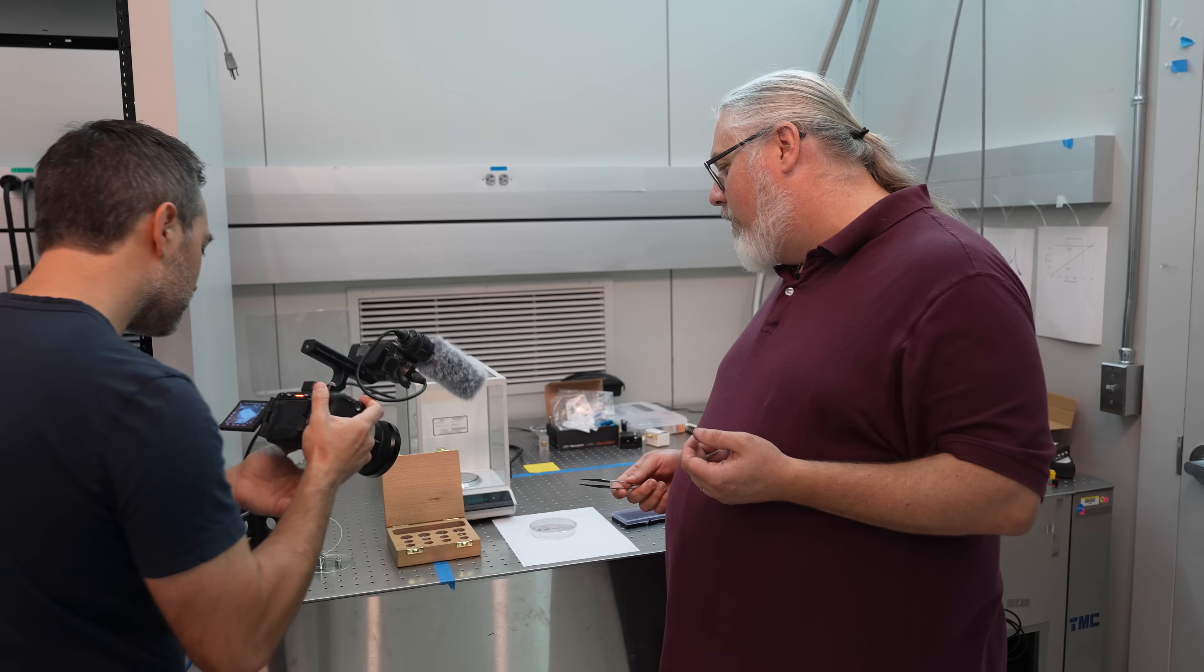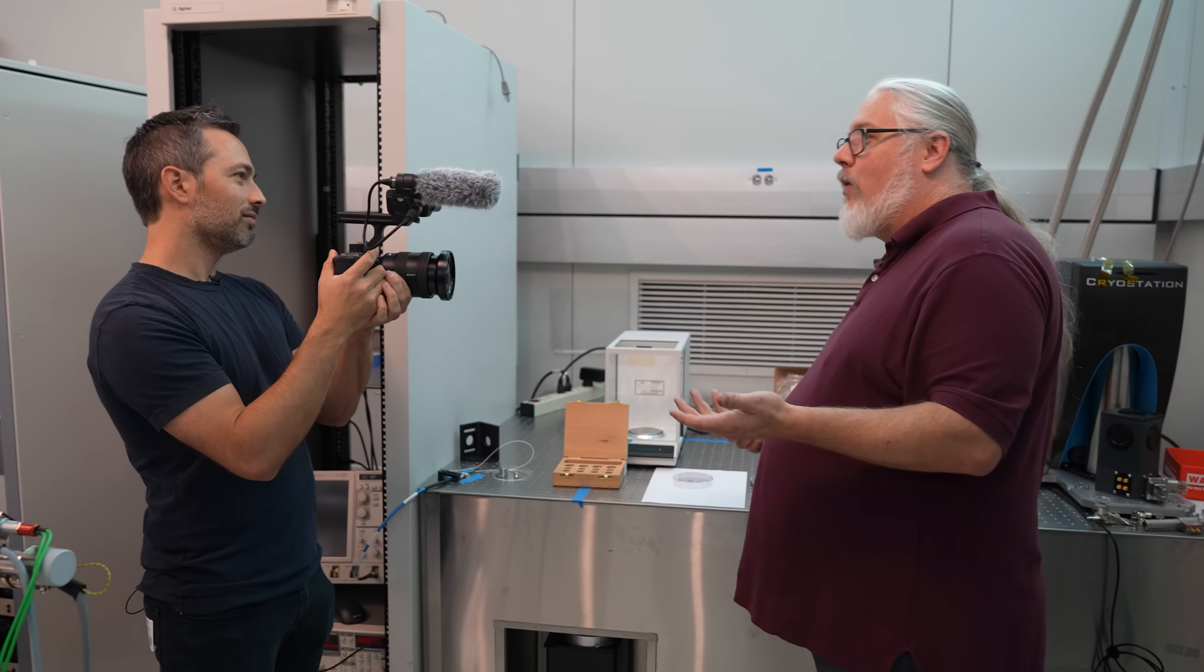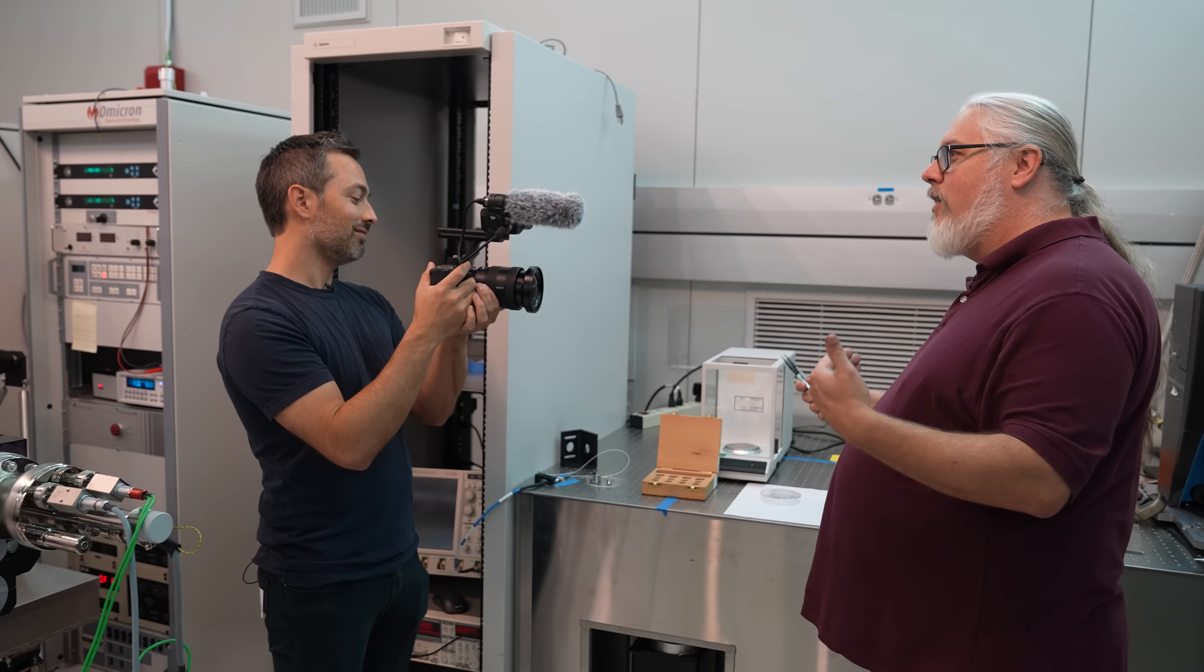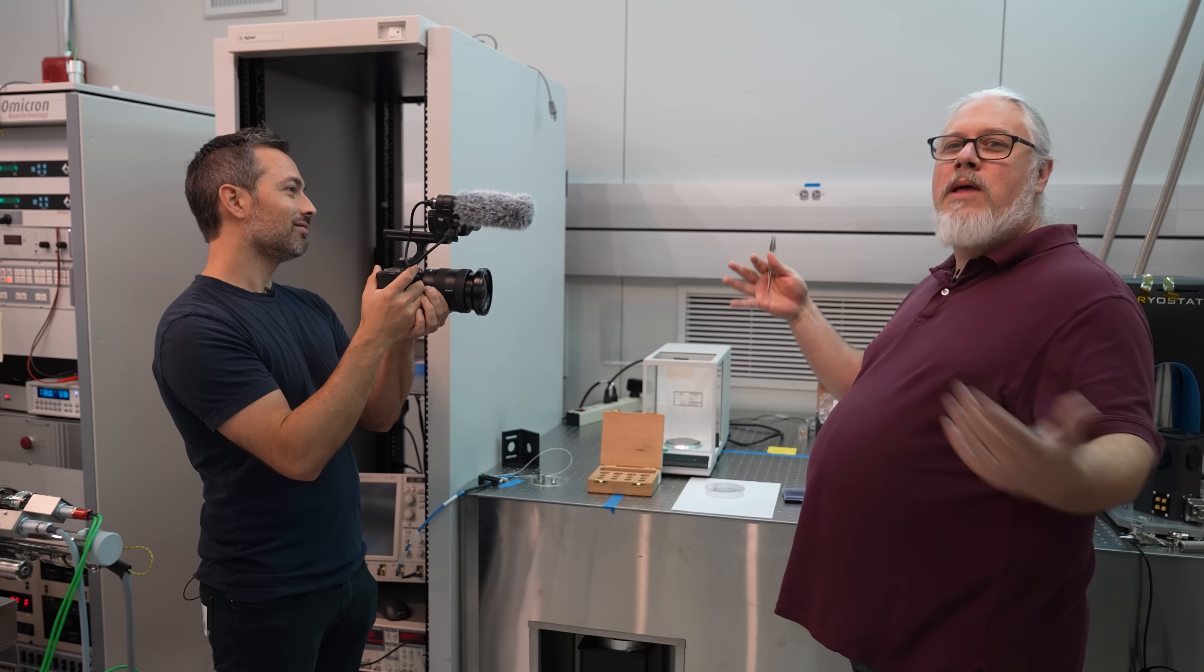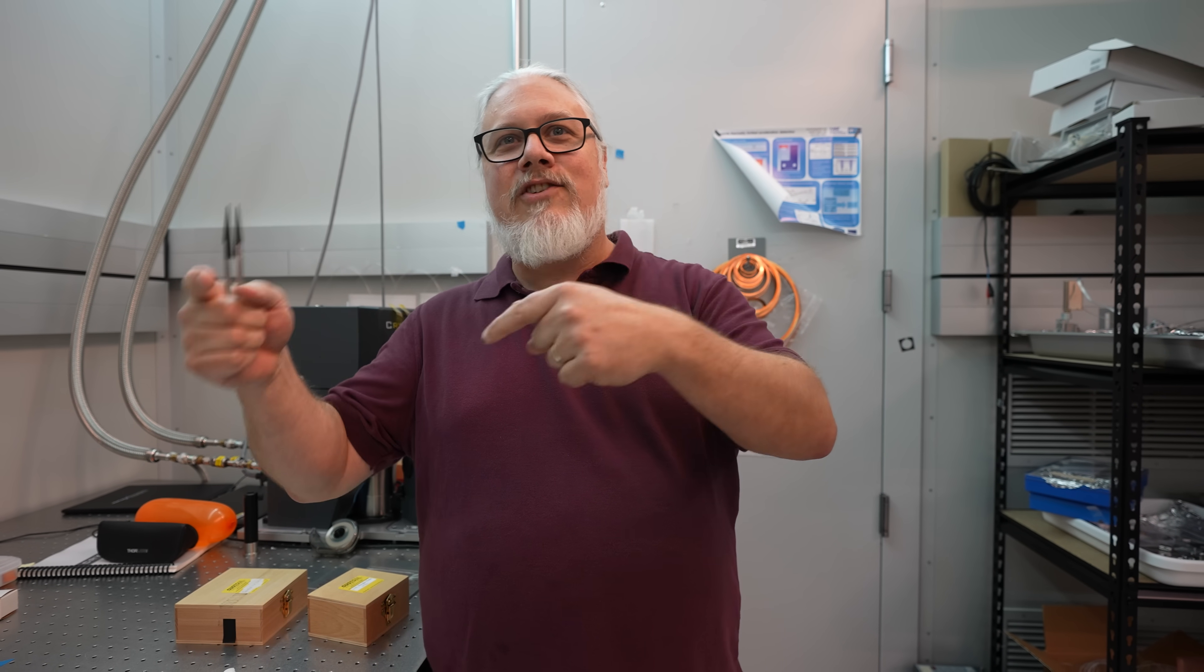One of the interesting things from my perspective about this is that you can really subdivide over a large range of these masses from a kilogram. This is one millionth of a kilogram is a milligram. So you can subdivide the kilogram by a million times. But you sort of pay a price for that because each time you do this subdivision, the uncertainty increases a little bit, right?